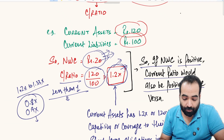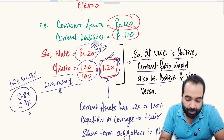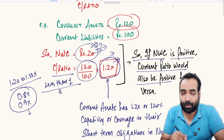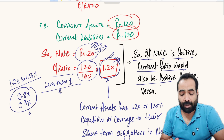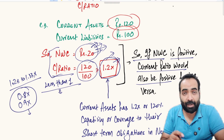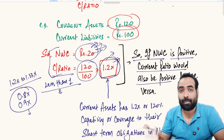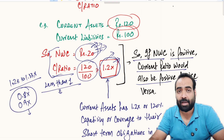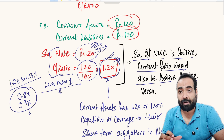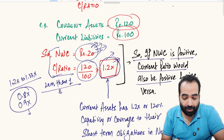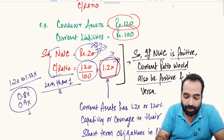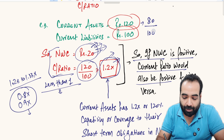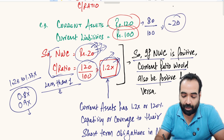The key point to learn here is: NWC is positive means current ratio is more than 1; NWC is negative means current ratio is less than 1. This will be discussed more in upcoming CMA-related and MPBF videos. For example, if current assets are ₹80 and current liabilities are ₹100, NWC will be minus ₹20 — a negative NWC — and the current ratio would be 0.8x, which is less than 1.